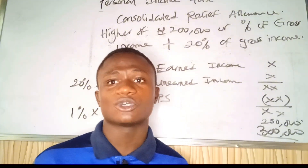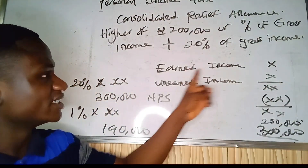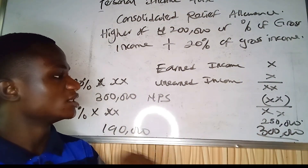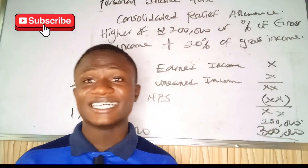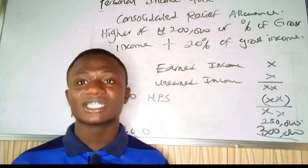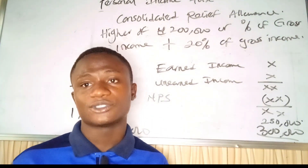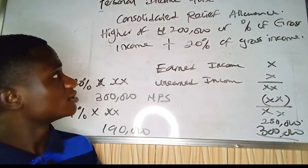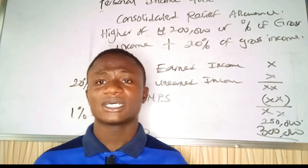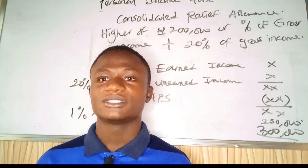So to summarize how to compute personal income tax: first, list your earned income; add your unearned income; subtract your non-taxable items to arrive at gross income; then apply the Consolidated Relief Allowance; and finally apply the tax rates. The tax rate is progressive in nature, and in professional exams you will be given the tax rate. In our next video class, we take a question and examine it together. Don't forget to like, share, and subscribe. Thank you — I am Matthew, your tutor.